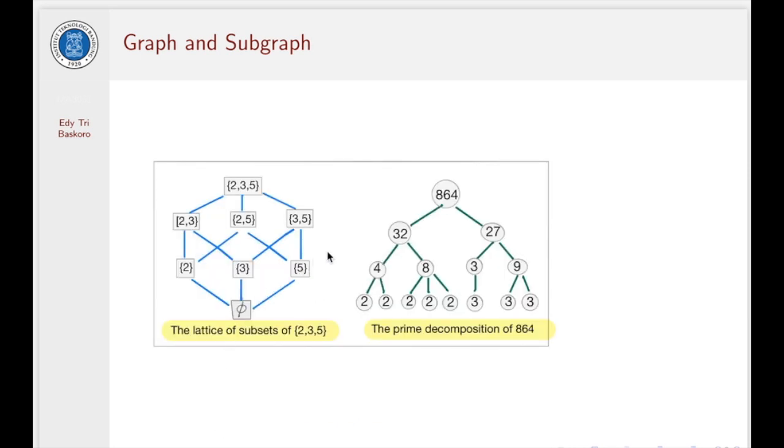In the study of lattices and Boolean algebra, graphs rise as diagrams of these structures. The figure on the left side shows the lattice of subsets of the set of 2, 3, and 5. And then the figure on the right side shows the prime decomposition of the integer 864.